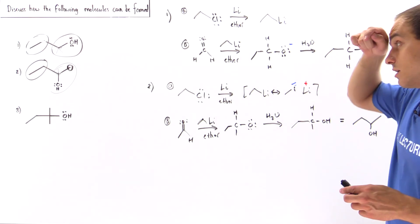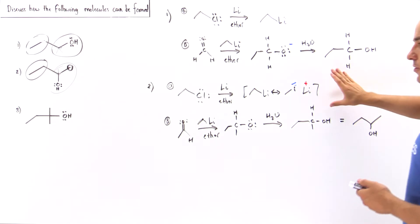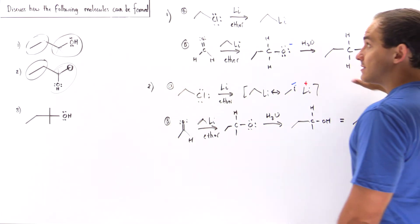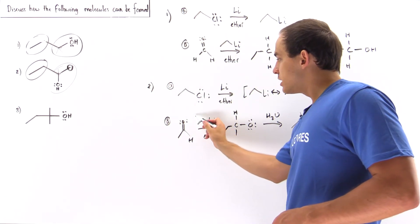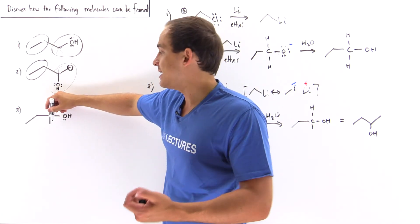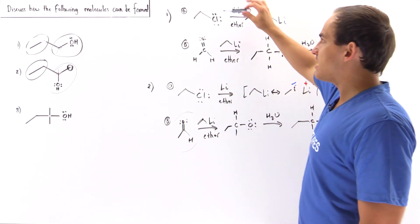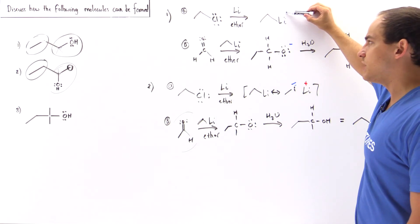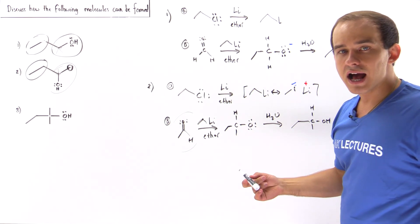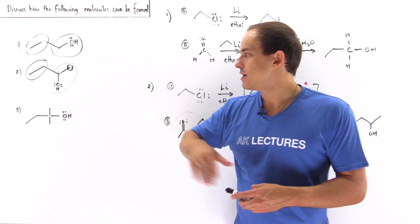Finally, for product number three — our tertiary alcohol — the steps are exactly the same, but the key difference is in step two: we switch the aldehyde for a ketone, because this carbon is attached only to methyl groups and has no H's. In step one we mix the starting material with lithium in ether to form the organolithium reagent. In step two we react it with the ketone to form the alkoxide intermediate. In step three we add water to protonate the oxygen and form our tertiary alcohol.